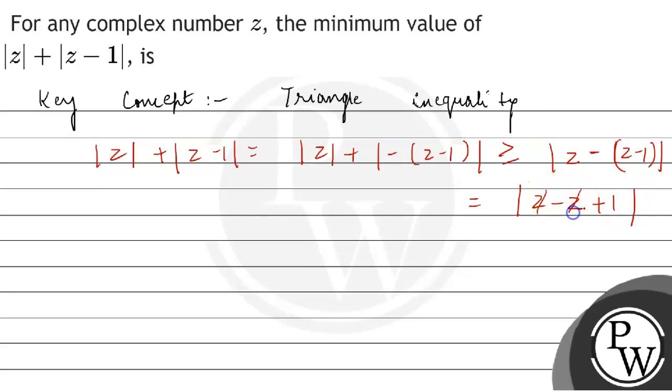Now z cancels out with z. So we are left with mod of z plus mod of z minus 1 is greater than or equal to mod of 1.